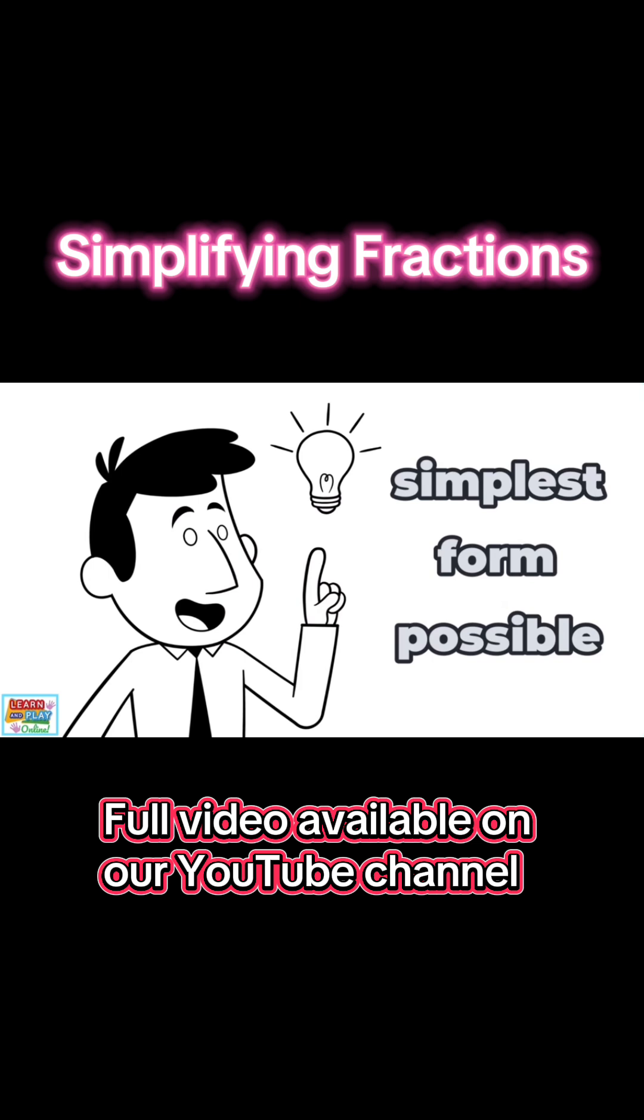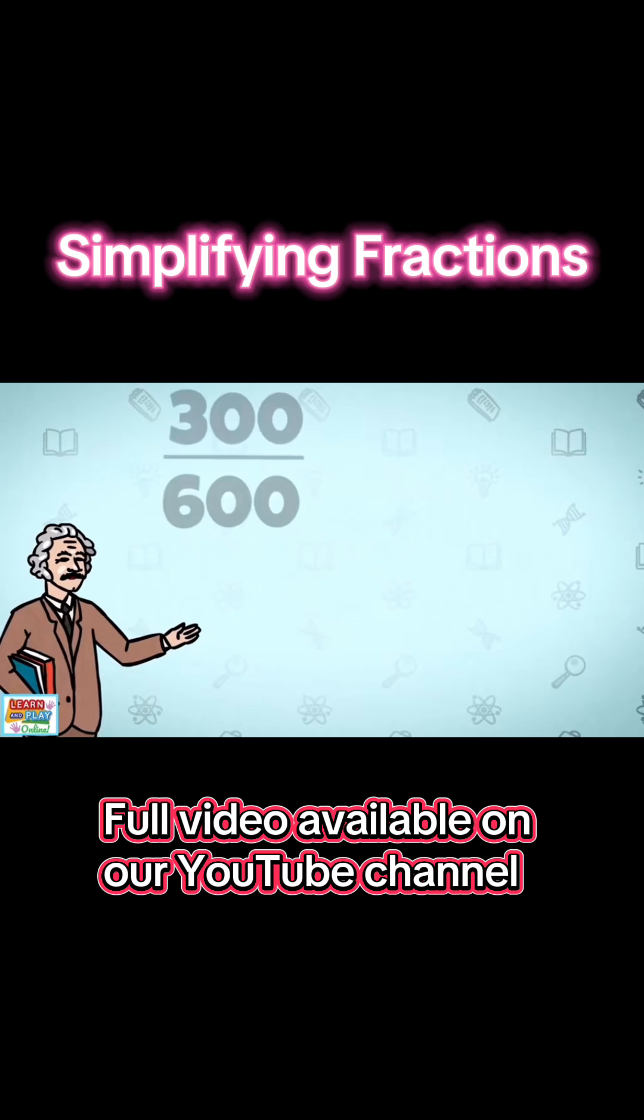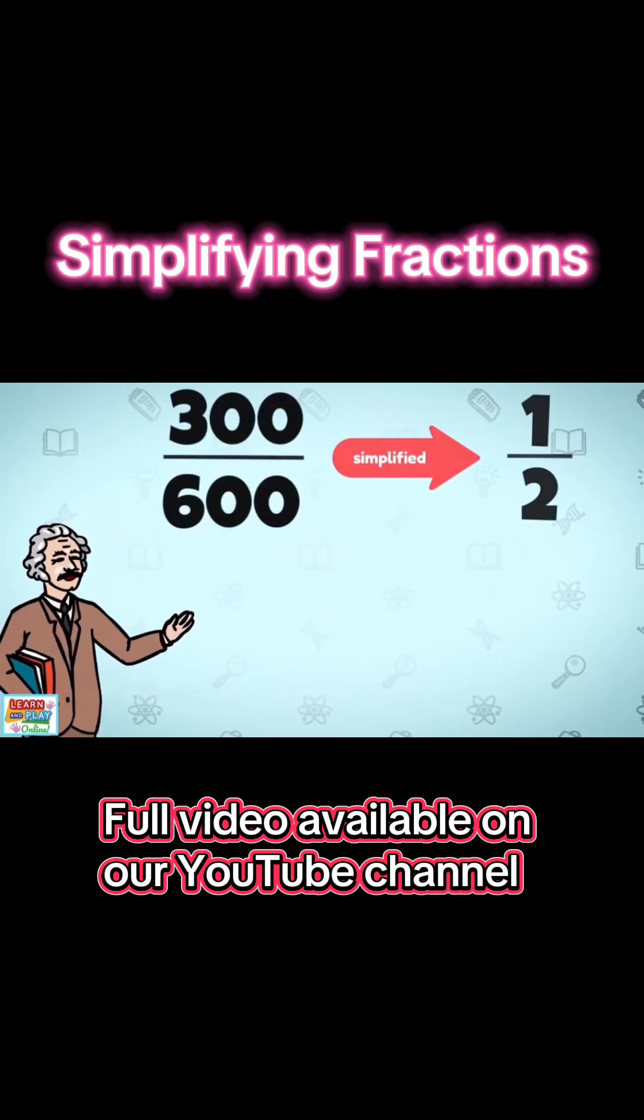We don't want to deal with larger numbers unnecessarily. For example, why say 300 over 600 when we can just say half?